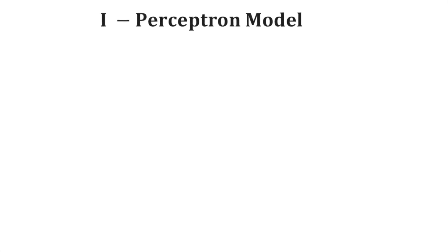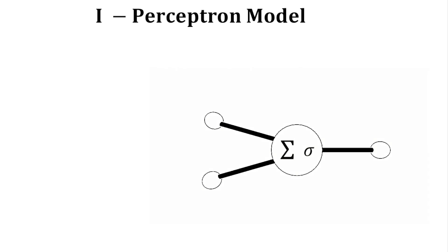I will begin with a reminder of what a perceptron is. Here, I will only consider perceptrons of two inputs to stay simple. Basically, a perceptron is a function that takes multiple inputs, combines them with parameters, and applies a threshold.